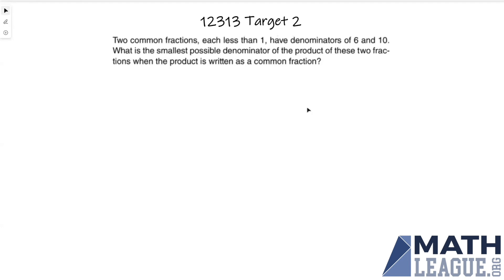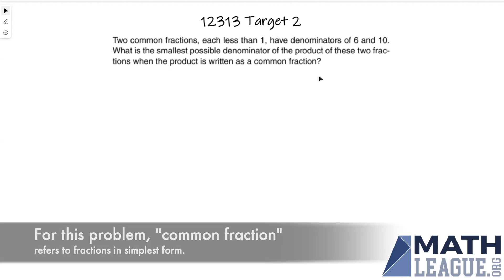Hello this is Taiki again and I'm back to present another problem, this time from the target round target number two. Two common fractions, each less than one, have denominators of six and ten. What is the smallest possible denominator of the product of these two fractions when the product is written as a common fraction?